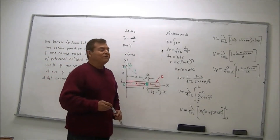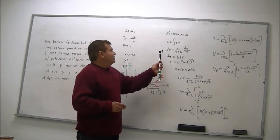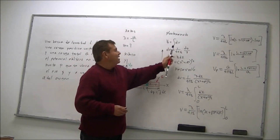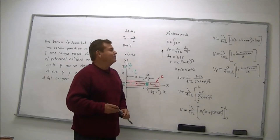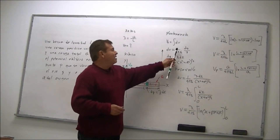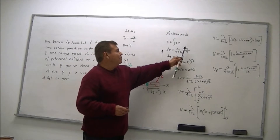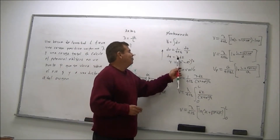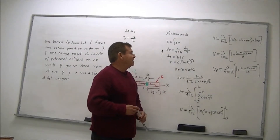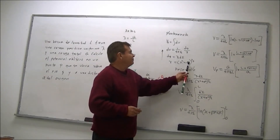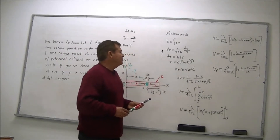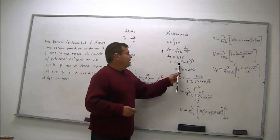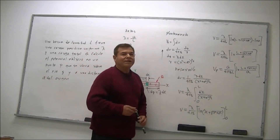Seguimos con el planteamiento. El potencial debido a una distribución de cargas es igual a la integral de dV. Y dV es igual a 1 sobre 4πε₀ por dQ sobre R. Diferencial de Q es lambda diferencial de X, y R, que es la distancia al punto en donde se calcula, será (X² + A²)^(1/2).